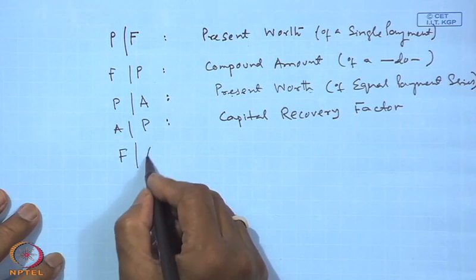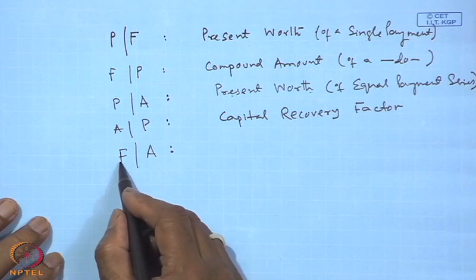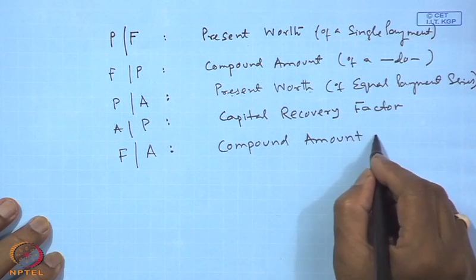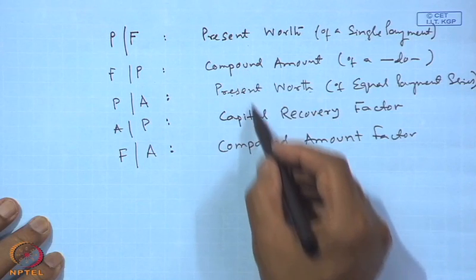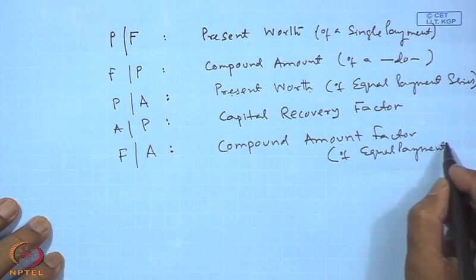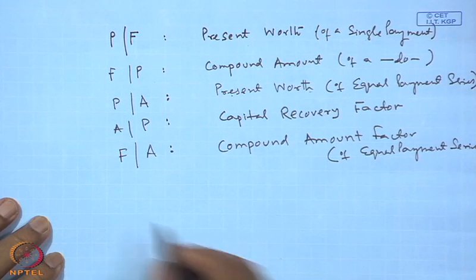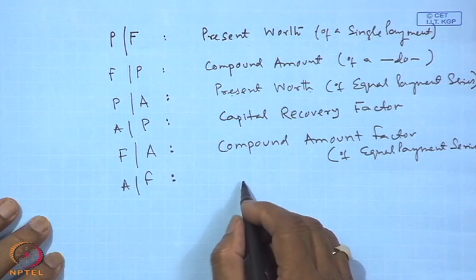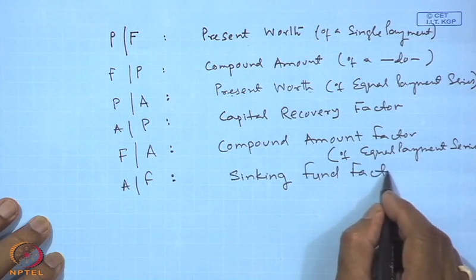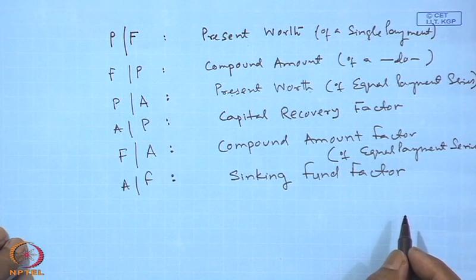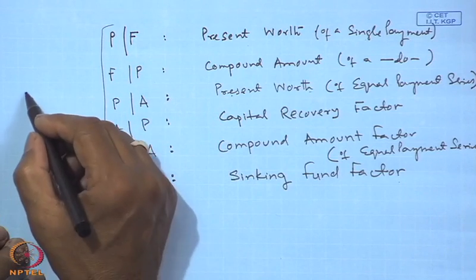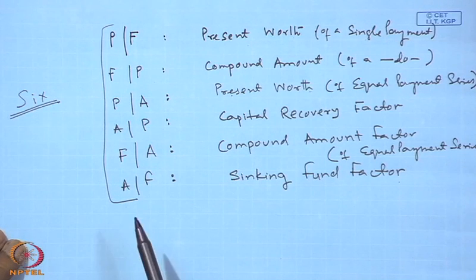These are the 6 fundamental factors that we shall be using. Now we had used these to make comparisons among economic alternatives, and in that we discussed 3 different methods: the present worth comparison method, the equivalent annual cost comparison method, and the internal rate of return comparison method. These 3 are very basic comparison methods based on consideration of the time value of money.